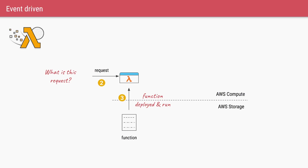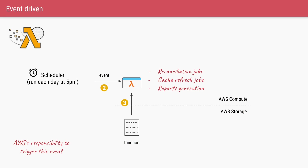We talked about how a function is deployed from storage to compute on demand whenever there is a request, but we didn't discuss what an actual request is. A request is actually an event generated by the cloud provider based on the configuration you set while creating the function, and AWS is capable of providing many types of events.